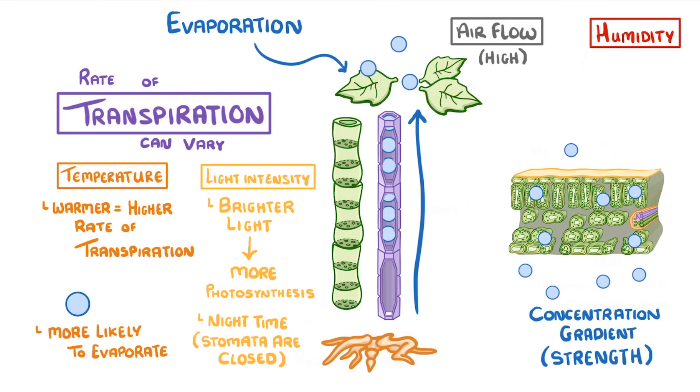When airflow is high, for example it's really windy, then the water molecules that leave the leaf are quickly going to be blown away. So the concentration gradient between the inside and outside is going to be kept high, increasing the rate of transpiration.